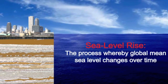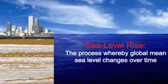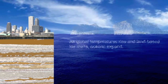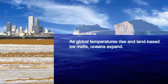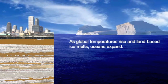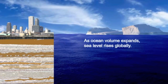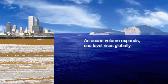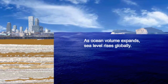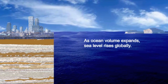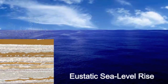The other process contributing to land loss is sea level rise. As global temperatures rise and land-based ice melts, oceans expand. As ocean volume expands, sea level rises globally. This is known as eustatic sea level rise.